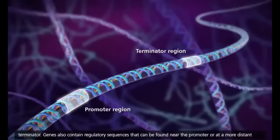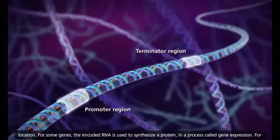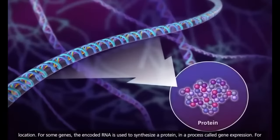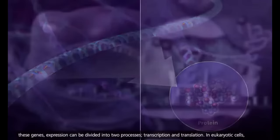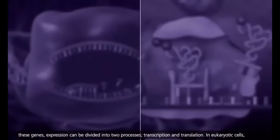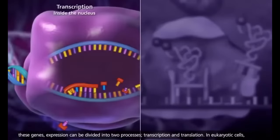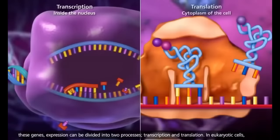Genes also contain regulatory sequences that can be found near the promoter or at a more distant location. For some genes, the encoded RNA is used to synthesize a protein in a process called gene expression. For these genes, expression can be divided into two processes: transcription and translation.